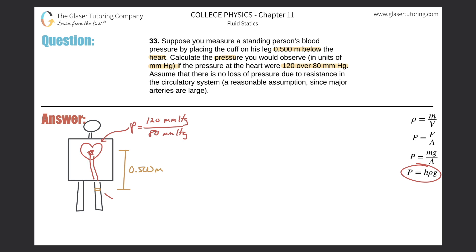Now, keeping that in mind, let's write out the equation. Pressure equals height multiplied by the density of the fluid multiplied by gravity. In this particular case, we're talking about blood inside the descending aorta. What I'm going to do is convert the units of the height of blood into height of mercury — that's basically what I'm doing.